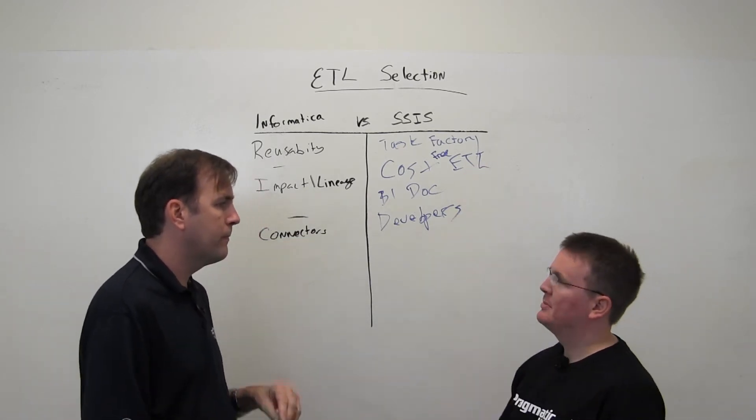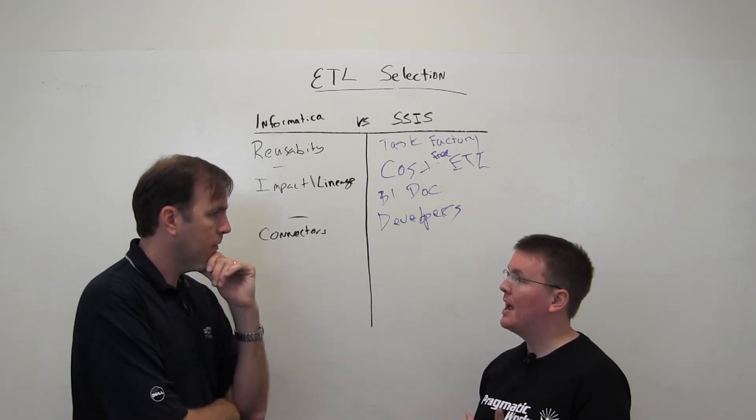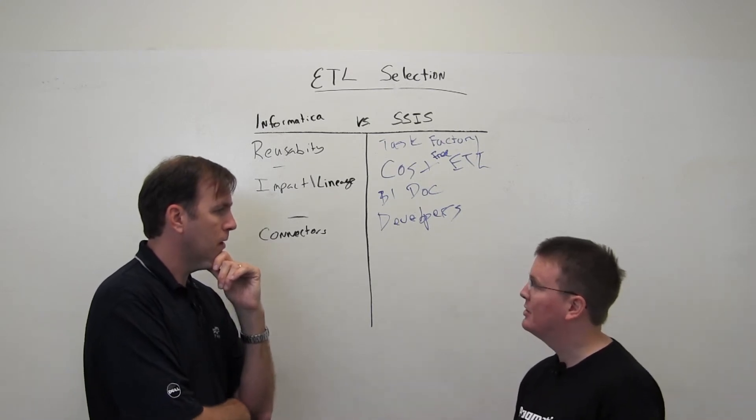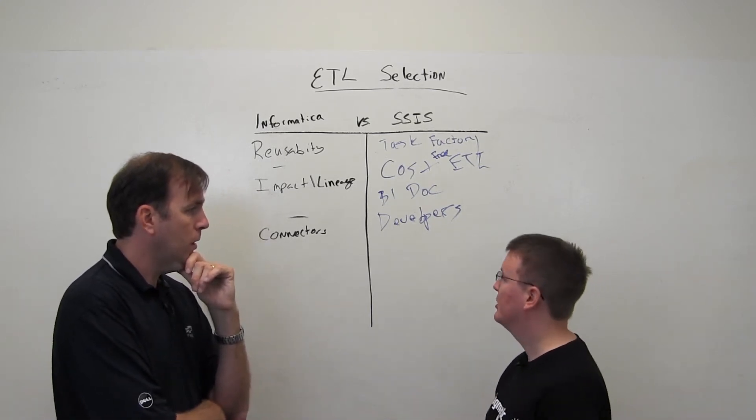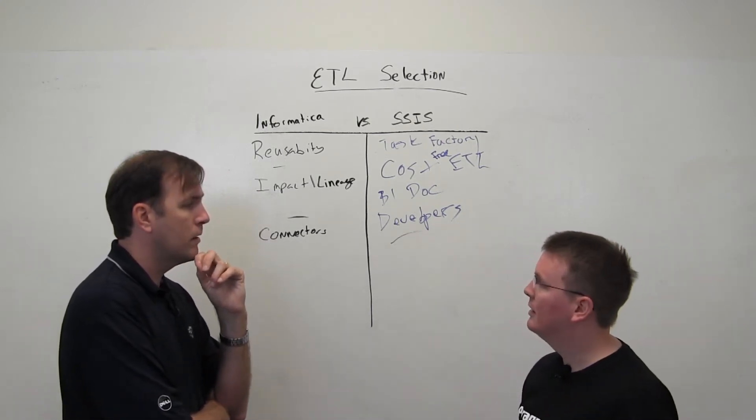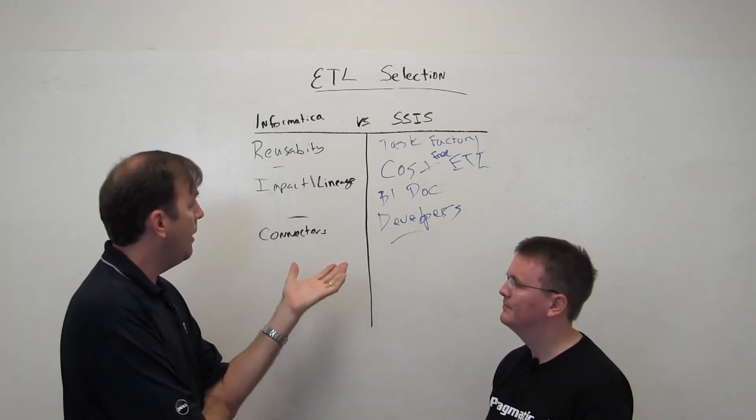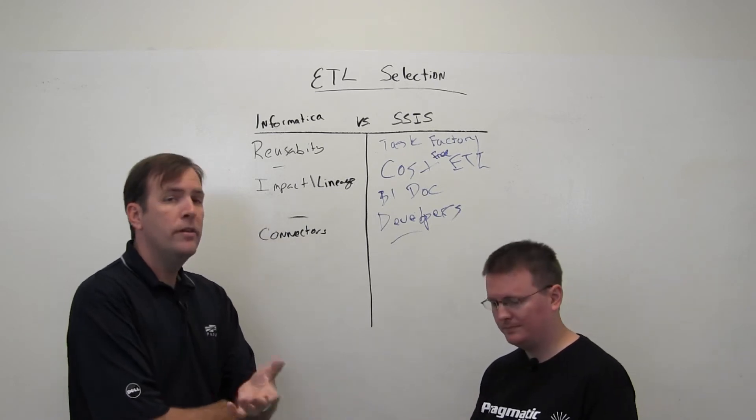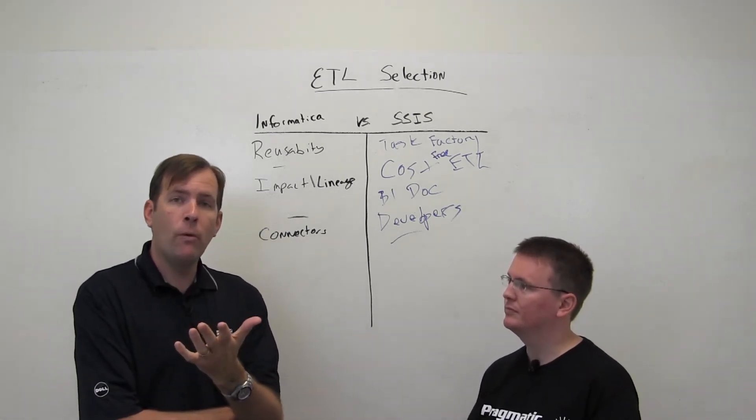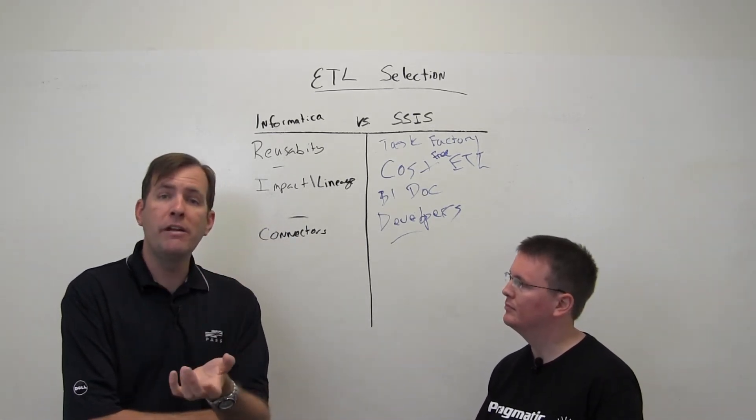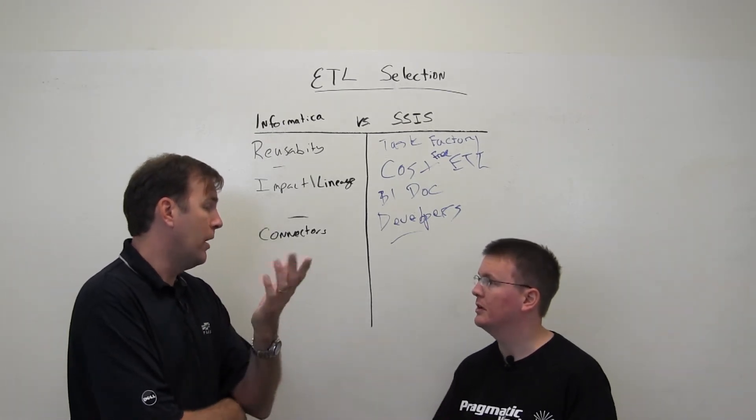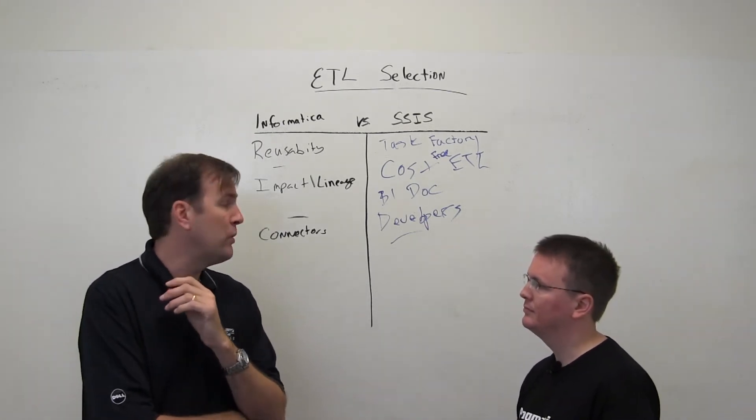So what does SSIS have around connecting to some of those places? Yeah, again, this kind of comes back to, we talked about task factory. There's a lot of tools out there that have third-party connections, like what you mentioned, salesforce.com. Task factory has a connector to that at a much lower cost. And also they have, there are some, part of the feature pack, you can go to things like DB2 also. So you can get, as part of Microsoft's core offering, look up the feature pack, and you'll find extra connectors there. At no cost, of course, if you're licensed for SQL Server.